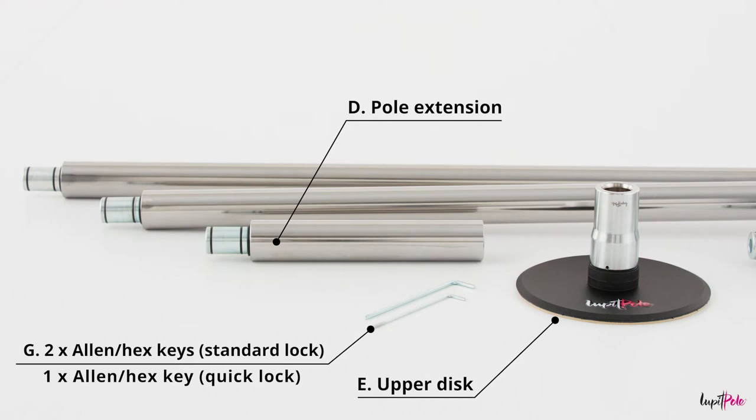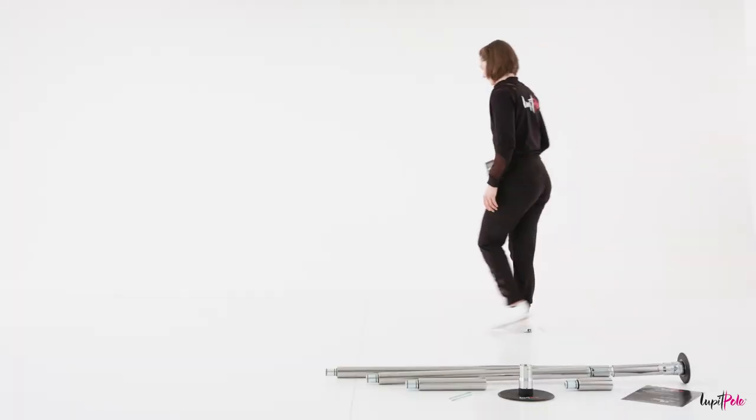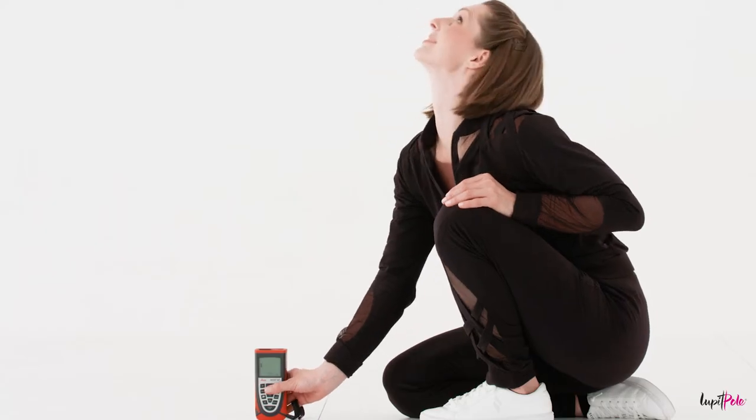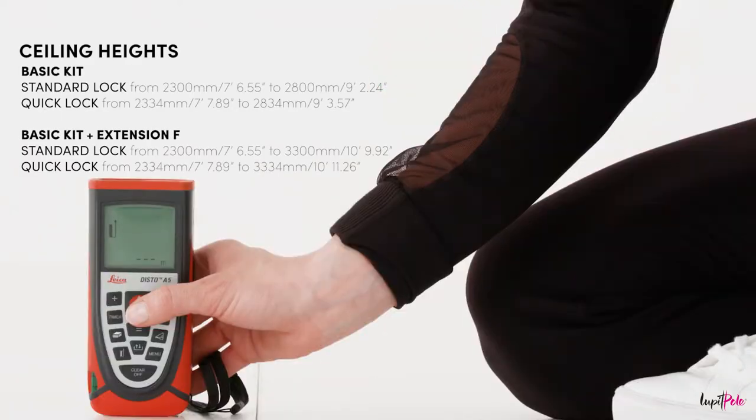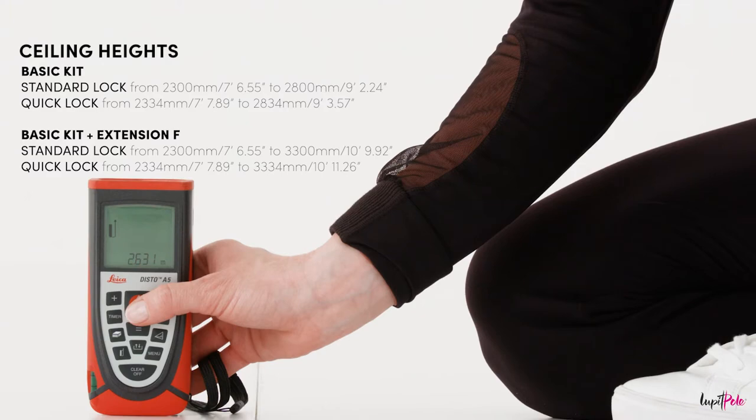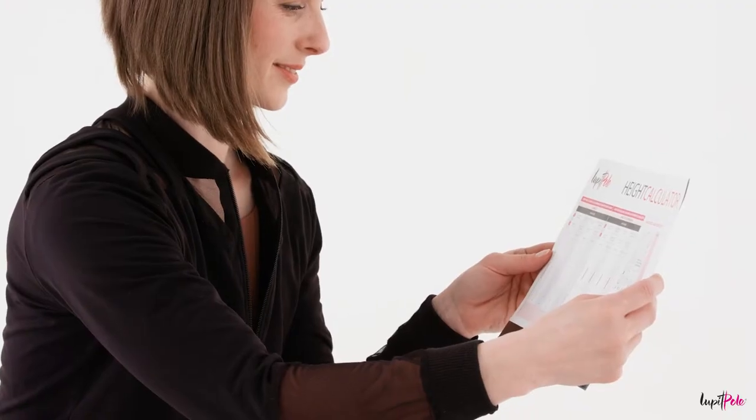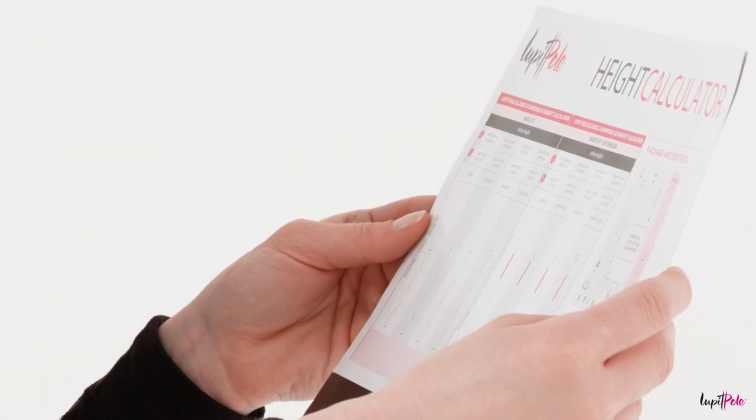Before you purchase your Loop-It Pole Classic, it is very important that you measure your ceiling so you can order extra extension if needed. Loop-It Pole Classic Height Calculator can be found in the instructions for use.